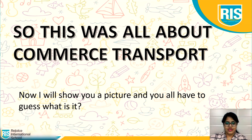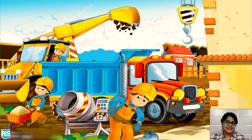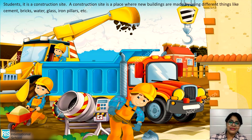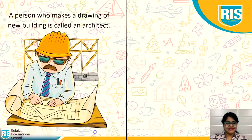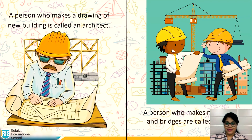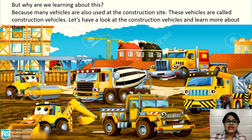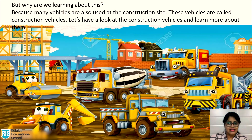Now I'll show you a picture and you'll have to guess what it is. Students, it's a construction site. A construction site is a place where new buildings are made by using different things like cement, bricks, water, glass, iron pillars, etc. A person who makes a drawing of a new building is called an architect. A person who makes new buildings and bridges is called an engineer. Many vehicles are also used at construction sites — these vehicles are called construction vehicles. Let's have a look at them.